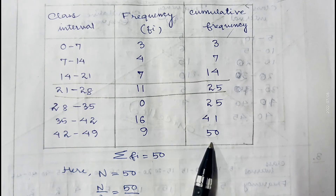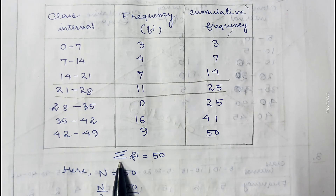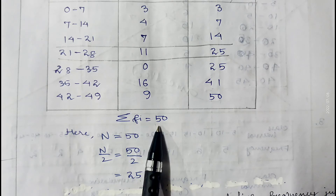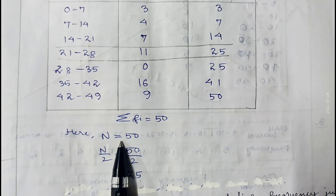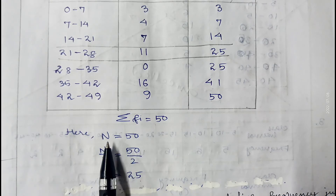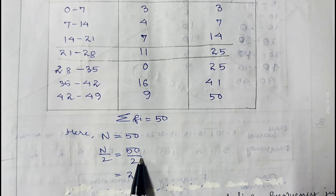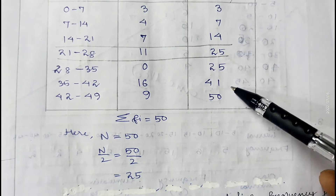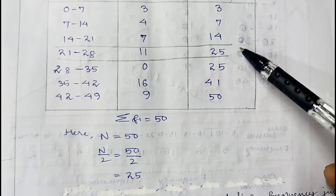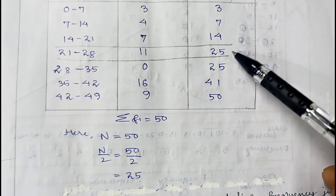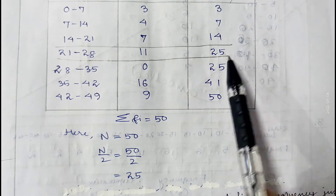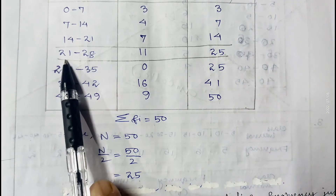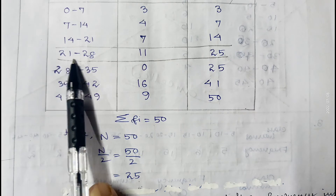After adding all the frequencies the total is 50, so summation fi equals 50, meaning n equals 50. Dividing n by 2 gives 25. The cumulative frequency just greater than or equal to 25 is 25, which corresponds to the class 21 to 28, so the median class is 21 to 28.